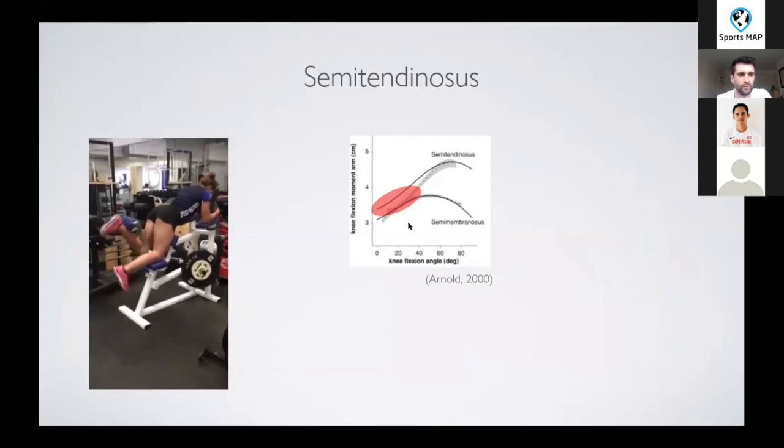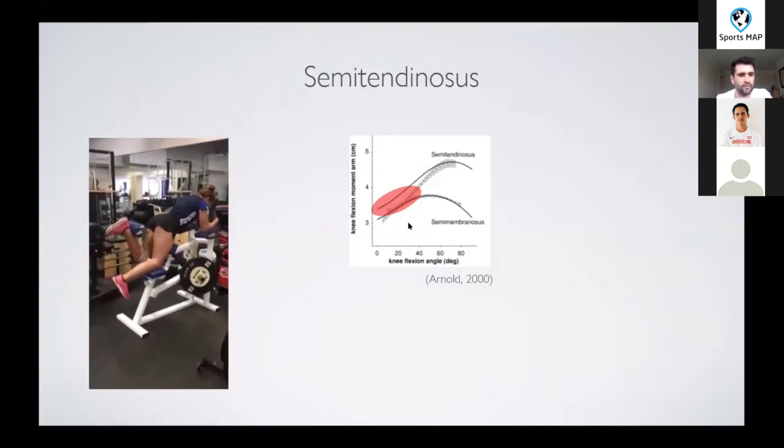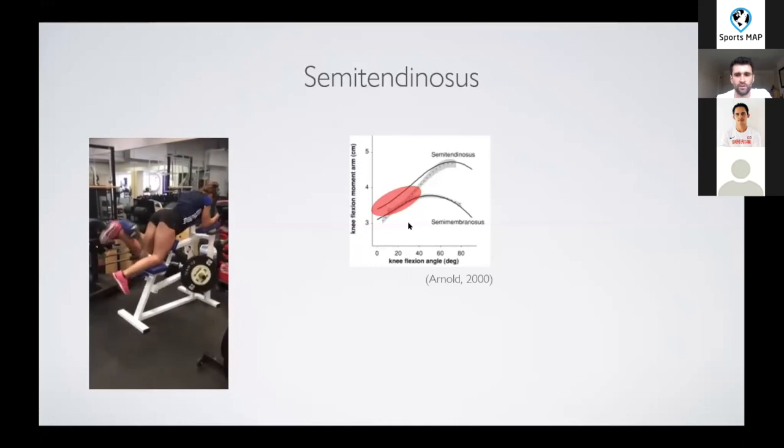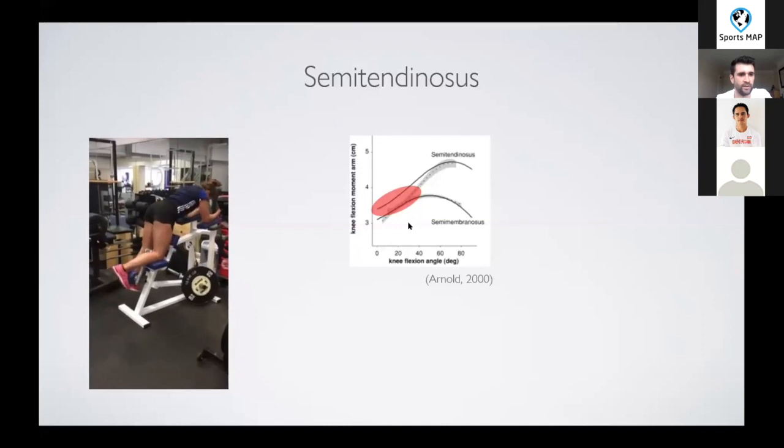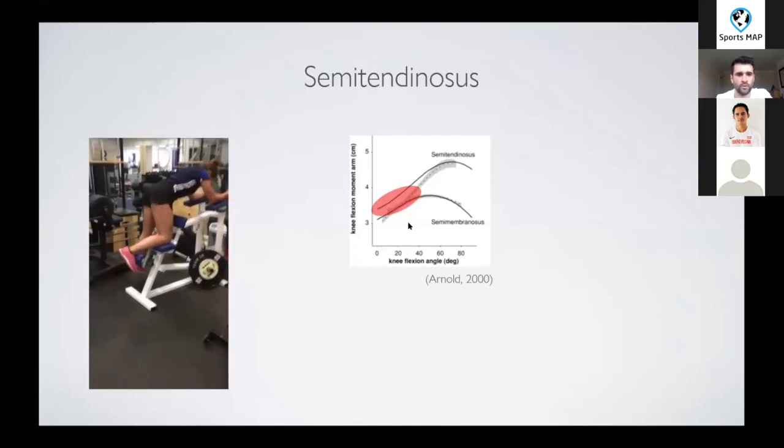So what can happen is athletes can create a lot of momentum in this extended position. And then that momentum means there's not really a requirement for high muscle tension when you get into this more flexed position. So potentially the tension on the semi-tendinosus is quite low.